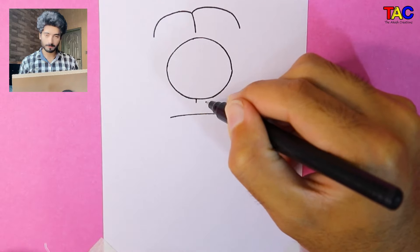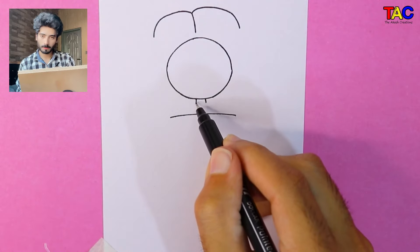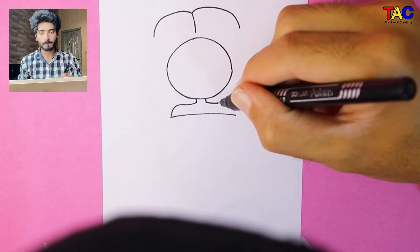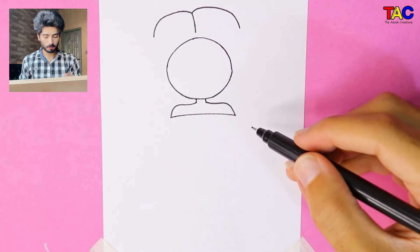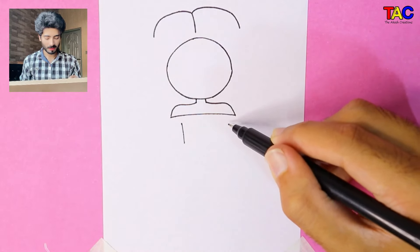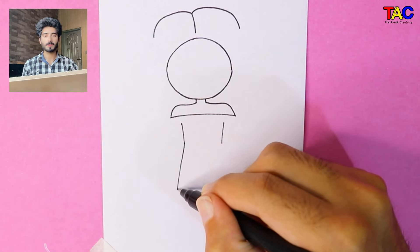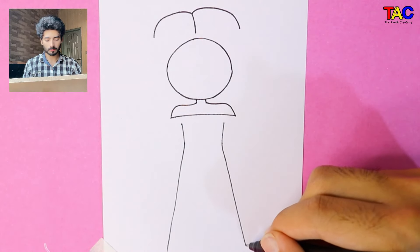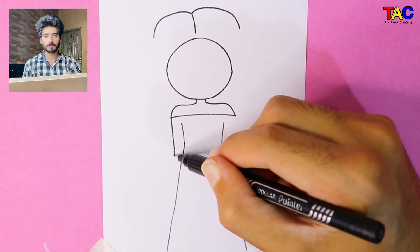I am drawing her body first. Let's start drawing her dress now. I am drawing her arms.